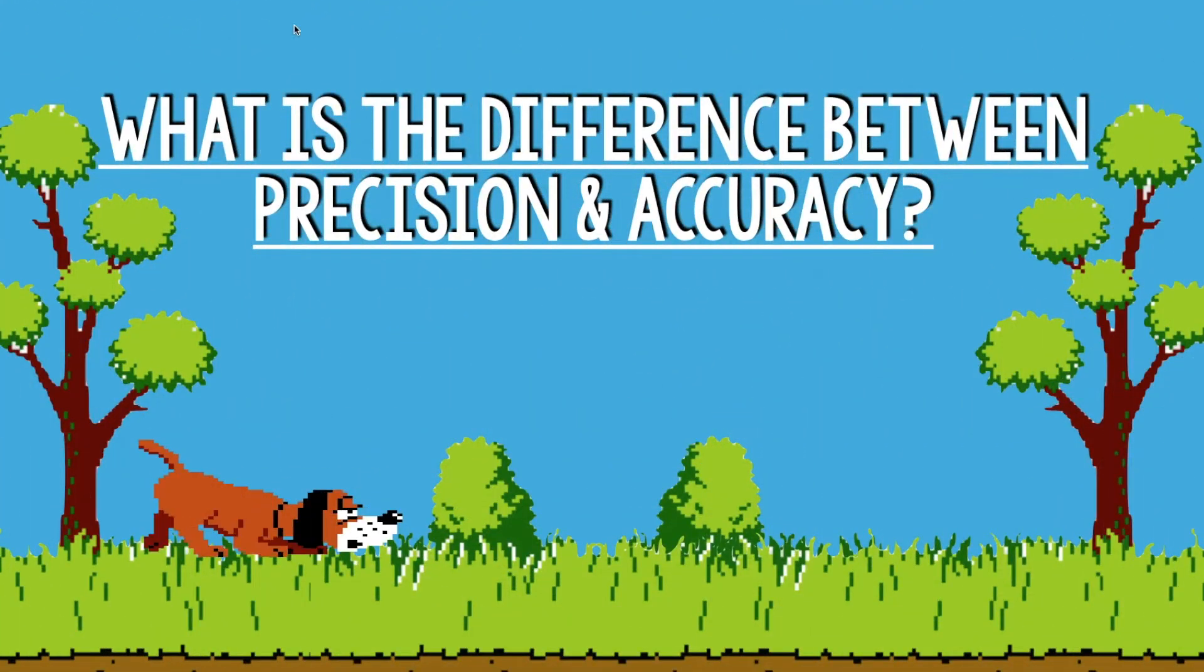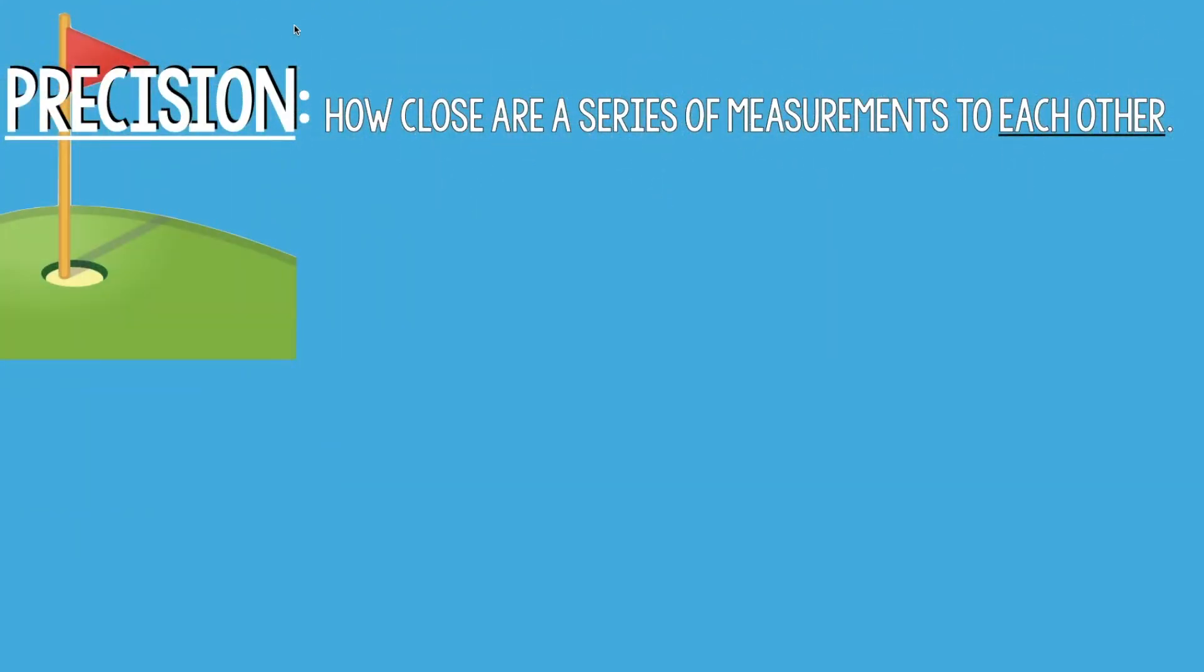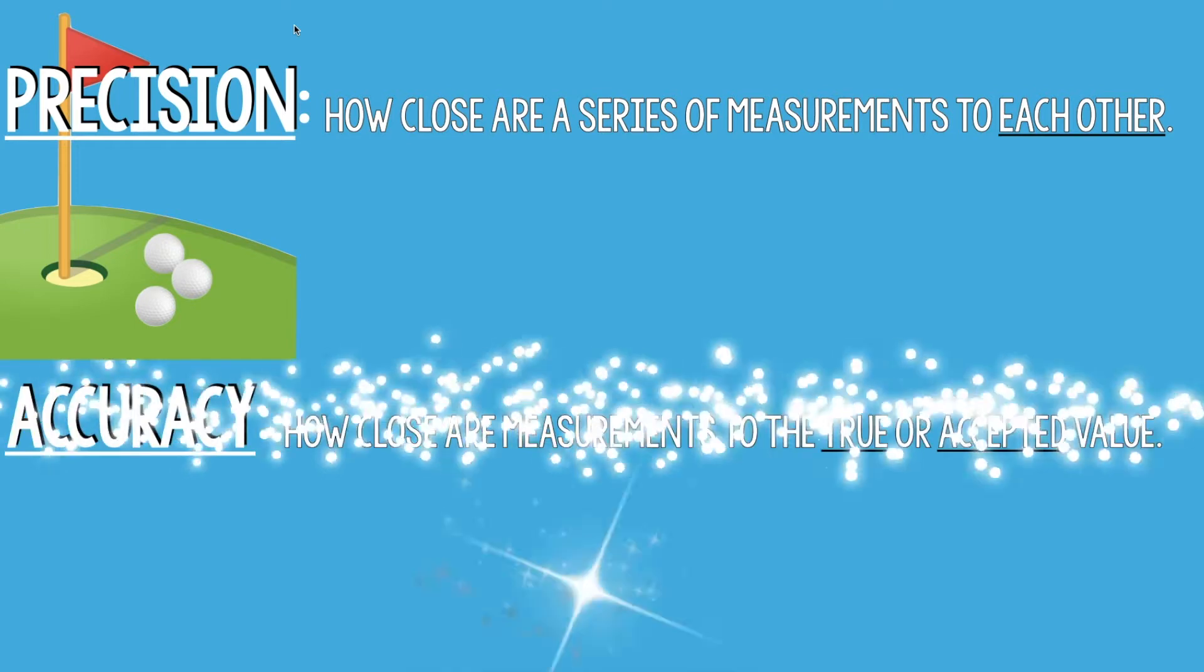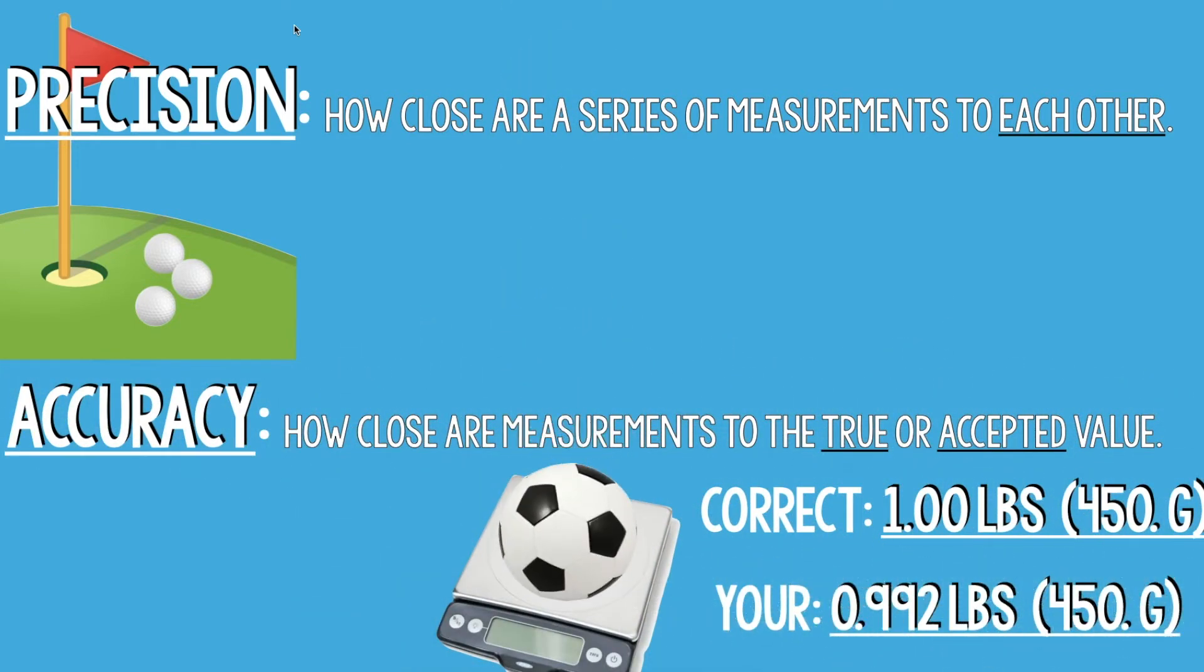What is the difference between precision and accuracy? Precision: how close are a series of measurements to each other. So let's pretend you're playing golf. You shoot three golf balls, they're all really close to each other, and because they're so close to each other, you have really good precision.